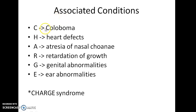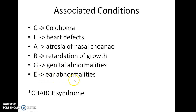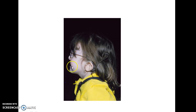Choanal atresia is associated with certain other congenital disorders which are together called CHARGE syndrome. C stands for coloboma, H stands for heart defects, A stands for atresia of nasal choanae, R stands for retardation of growth, G stands for genital abnormalities, E stands for ear abnormalities. These are the other conditions associated with choanal atresia. This baby shows signs of CHARGE syndrome and also has choanal atresia.